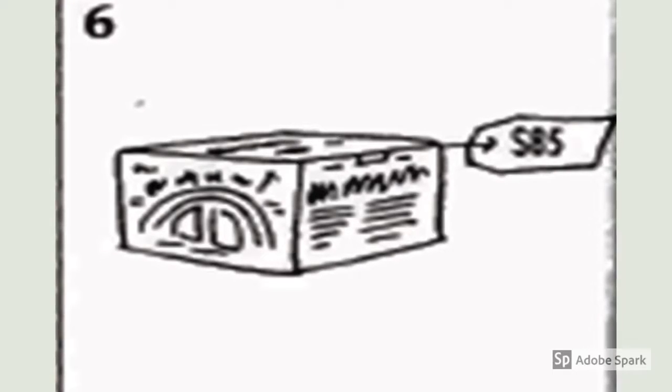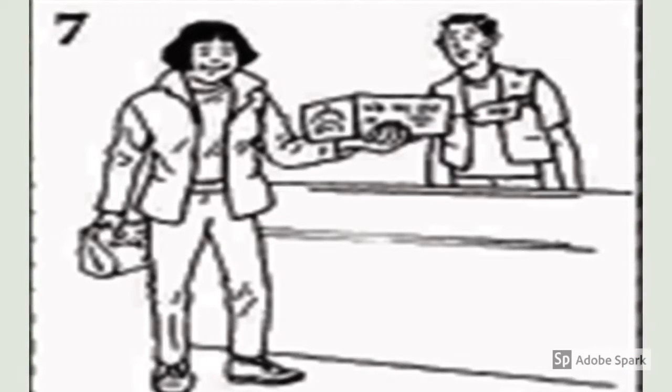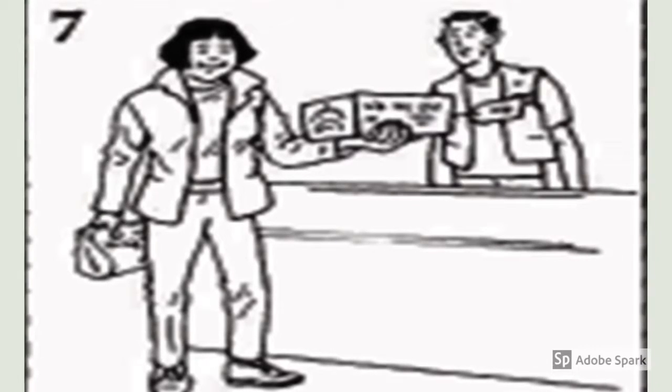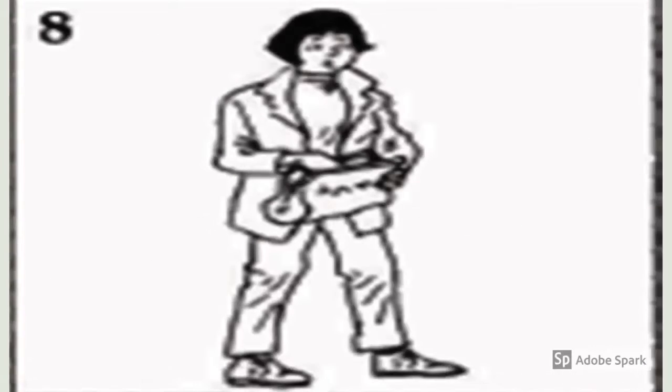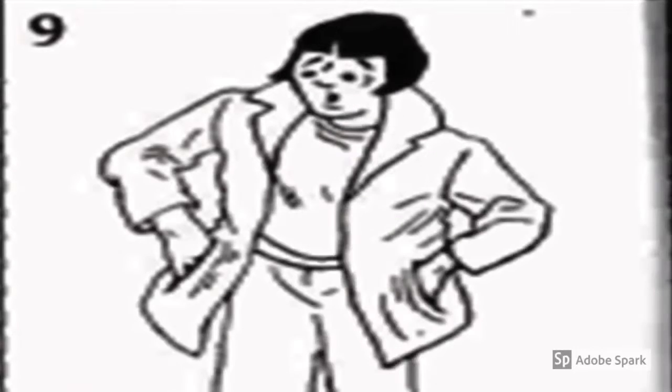Mrs. Park gives the toy to the cashier. Then she looks in her purse. There's no money in her purse. She looks in her pockets. There's no money in her pockets. Her money is gone. She begins to cry.